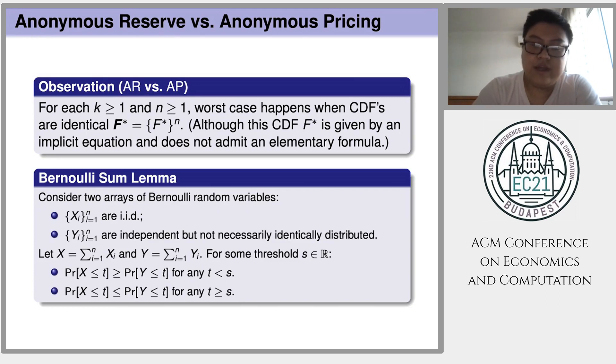To derive this observation, we develop this Bernoulli sum lemma. It states that if we consider two groups of independent random variables, the first group Xi, they are IID Bernoulli variables, and the second group Yi, they are just independent, but not necessarily identically distributed, we prove that there exists a threshold S to separate. This is the crossing point of the CDFs of the two random sums.